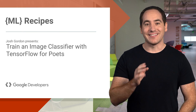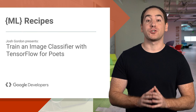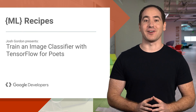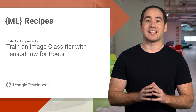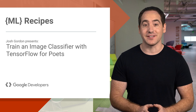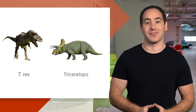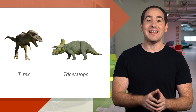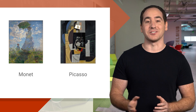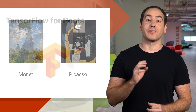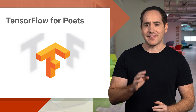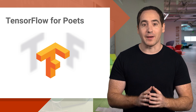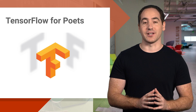Hey everyone, welcome back. In this episode, I'll show you how to train your own image classifier, starting from just a directory of images. For example, say you want to build a classifier that can tell the difference between a picture of a T-Rex and a Triceratops, or maybe classify a painting as being a Monet or Picasso. To do that, we'll work with a codelab called TensorFlow for Poets, which is a great way to get started learning about and working with image classification.